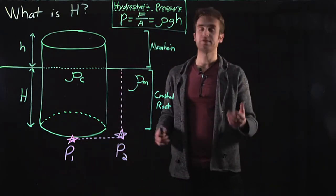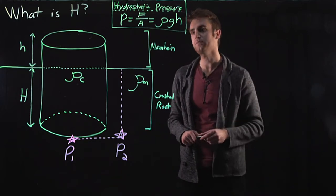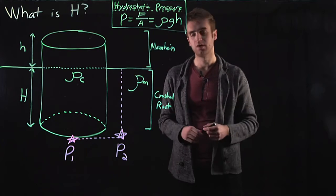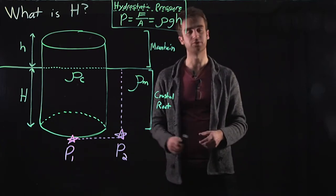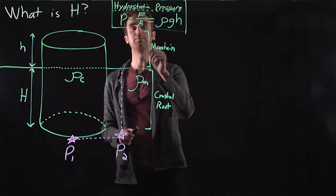So in isostatic equilibrium, we're interested in the hydrostatic pressure, which is just the pressure due to the weight of the overlying material at the point of interest. So we know that pressure is force divided by area.